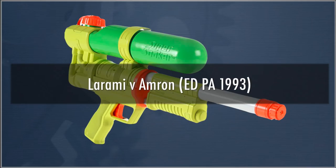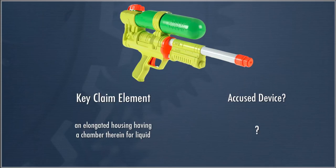The case assigned for literal infringement was Laramie v. Amron. Laramie is about super soaker devices — high-powered squirt guns. The key claim element was 'an elongated housing having a chamber therein for liquid.' The accused infringing device is pictured. The claim describes a liquid-holding container inside the housing — basically the barrel of the gun. Reading the specification and looking at the images, that's what the patentee seemed to mean by the elongated housing.